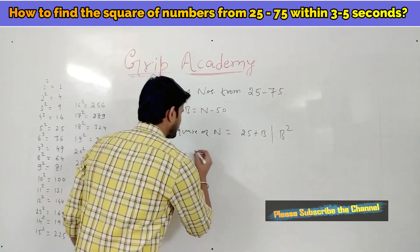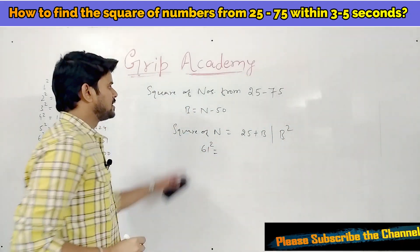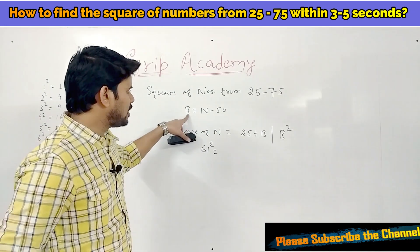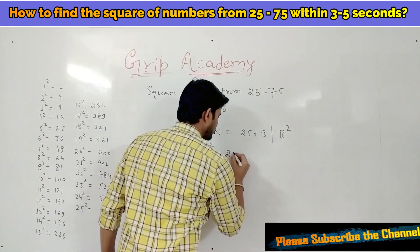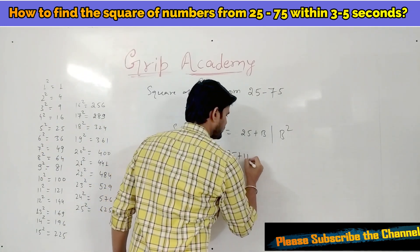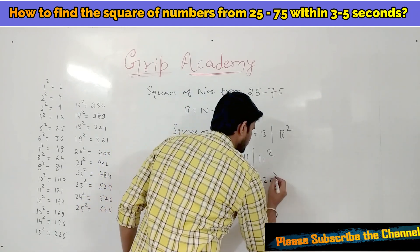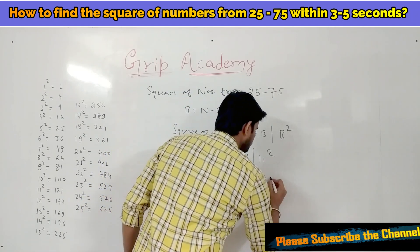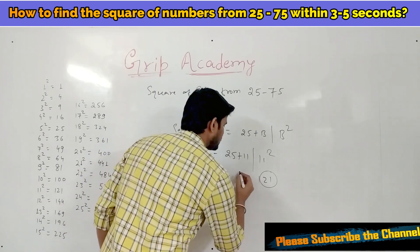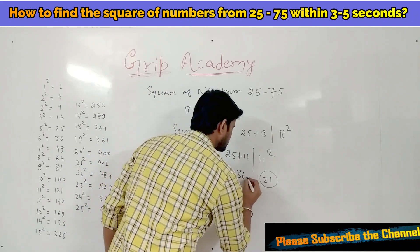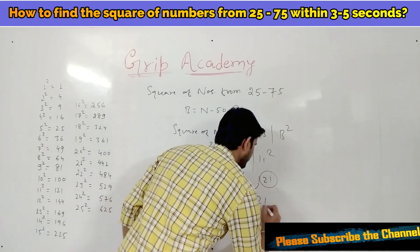Consider you have to find the square of 61. Base will be 61 minus 50 equals 11. So you get 25 plus 11, slash 11 squared. 11 squared is 121, so we take 21 and 1 is carry. 25 plus 11 is 36, plus carry 1 is 37. So 61² is 3721.